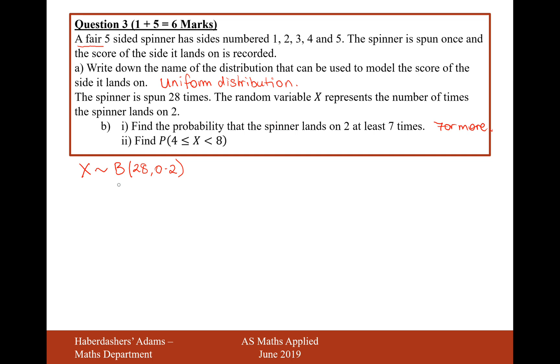So now what we need to work out is the probability of x being greater than or equal to 7. So that's 7 times landing on a 2, 8 times landing on a 2, 9 times landing on a 2, anything up to 28 times landing on a 2.